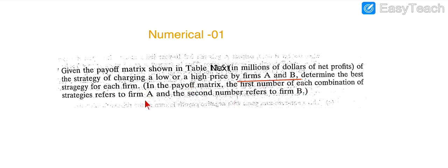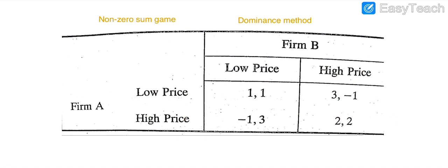You must remember that there are two firms, Firm A and Firm B, and they follow two strategies. The key point is that in any payoff matrix, the first number of each combination of strategies refers to Firm A and the second number refers to Firm B. I will explain this using the table so it will be easiest for you to understand the payoff matrix and solve the numerical.